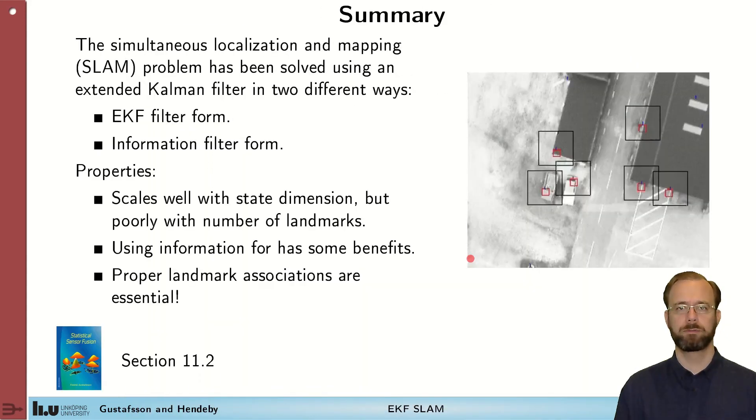To conclude we have looked at the simultaneous localization and mapping problem, the SLAM problem, and have solved it using the extended Kalman filter. Two different methods were considered. The first the normal extended Kalman filter version of the solution which had the problem of being very complex in the measurement update as all the elements in the covariance of the map had to be updated. Therefore we also looked at the information form of the extended Kalman filter to derive a method that had better computational complexity as it could utilize structure better.